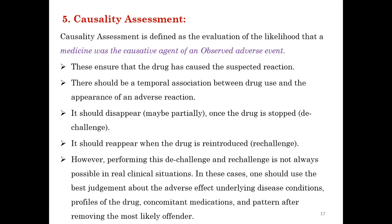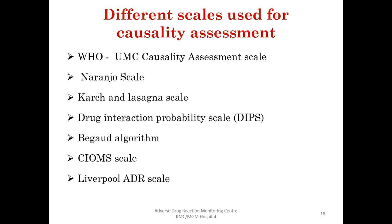Various scales are used for causality assessment. The most commonly used are the WHO Uppsala Monitoring Center causality assessment scale and the Naranjo scale. Other scales include Karch and Lasagna scale, Drug Interaction Probability Scale (DIPS), Begot algorithm, Sciome scale, and Liverpool ADR scale.